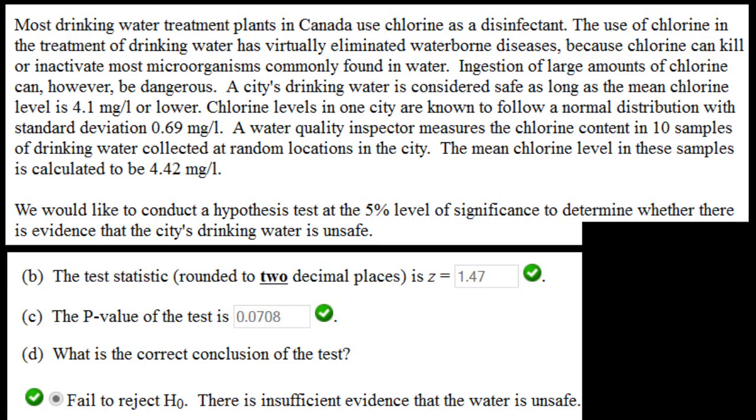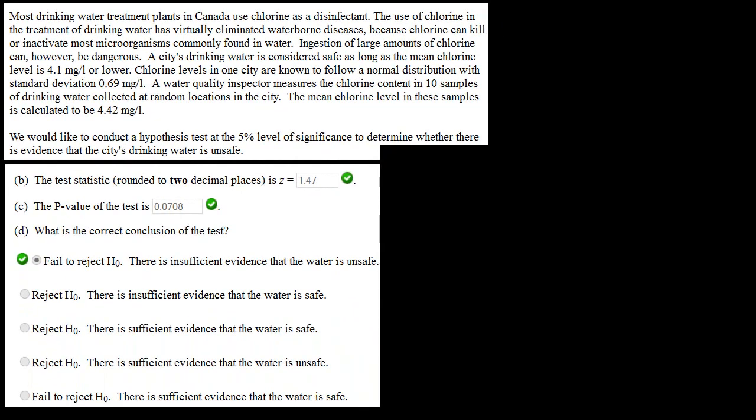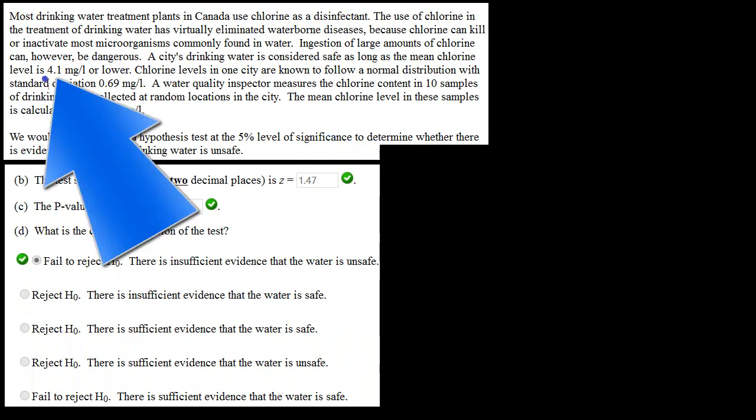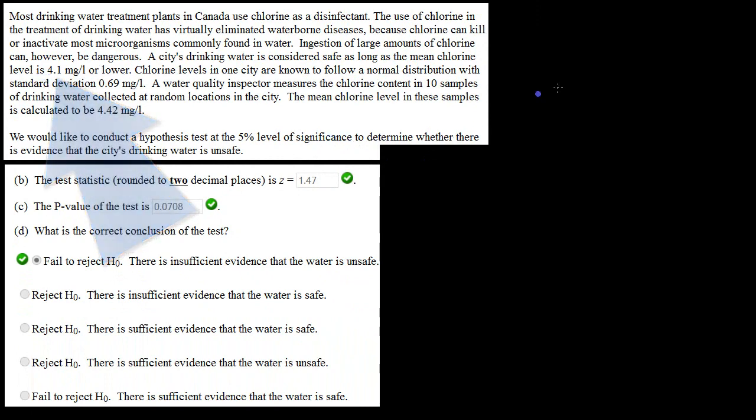Let's just identify some of the data we're given here so that we can actually answer this question. We can quickly identify the null hypothesis as being 4.1. Therefore, we can state the null hypothesis, the one we're going to be testing, because we want to know if the chlorine level is greater than this, greater than 4.1. Therefore, that's going to be called the null hypothesis.